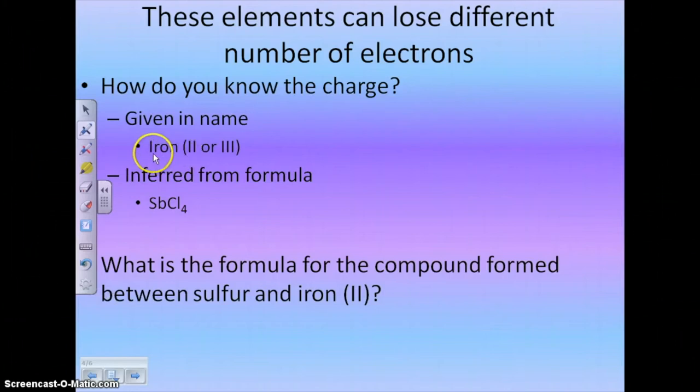Well, you're going to do one of two things to get their charges. Either it's going to be given to you in the name. Like here, we have iron. It can be 2 or 3. So Roman numeral 2 or Roman numeral 3. Roman numeral 2 indicates that it's a 2 plus charge, and Roman numeral 3 indicates that it's a 3 plus charge. Or you have to infer it from your formula. So on this one, we have Sb and Cl. We know the charge on Sb because we can do the opposite of swap and drop. So maybe lift and switch. So that came from the Sb originally. So the charge on the Sb is 4 plus.